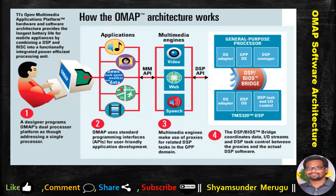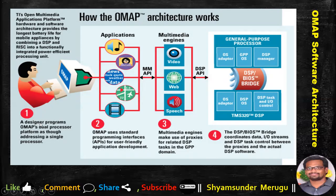Here we can see the software architecture of the OMAP and how it works. The Texas Instruments Open Multimedia Applications Platform hardware and software architecture provides the longest battery life for mobile appliances by combining DSP and RISC processors into a functionally integrated, power-efficient processing unit. A designer programs OMAP's dual processor platform as though addressing a single processor. OMAP uses standard programming interfaces and APIs for user-friendly application development.